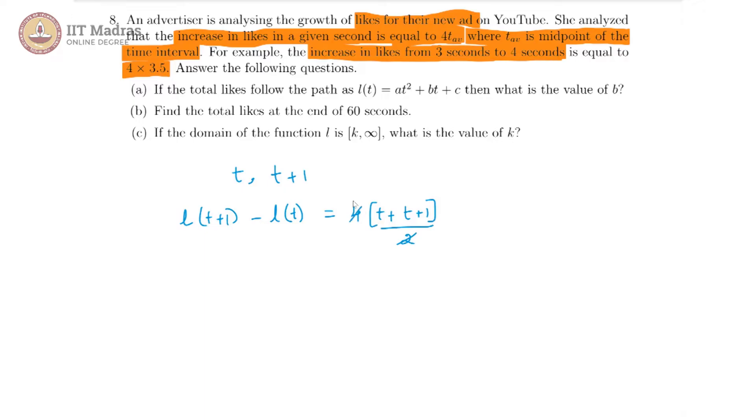That will give us 2 times 2t plus 1, which is equal to 4t plus 2. This is the difference in the likes from time t seconds to t plus 1 seconds.